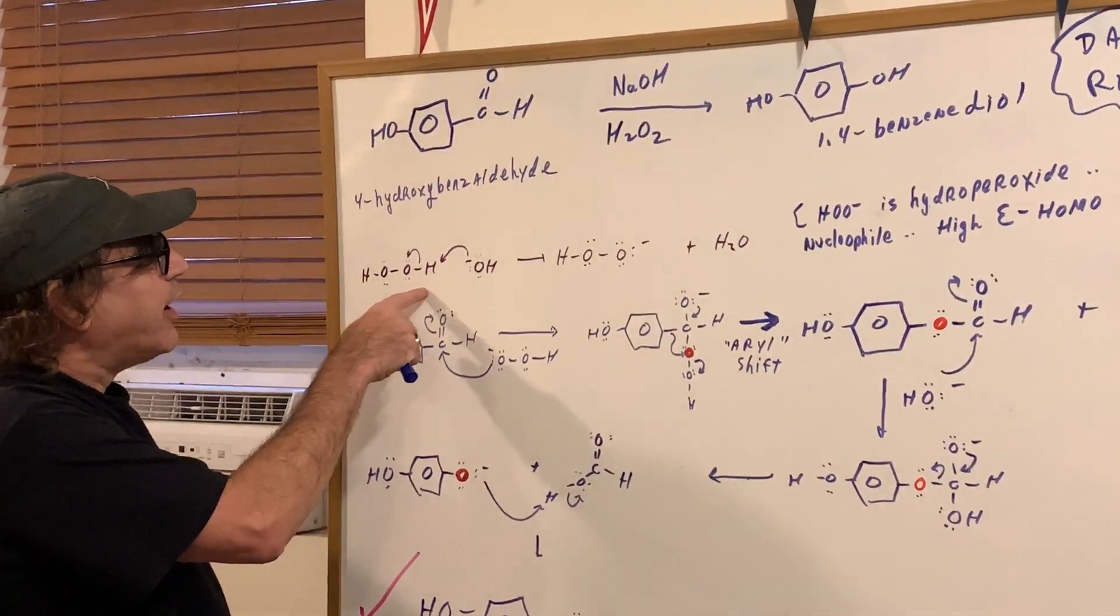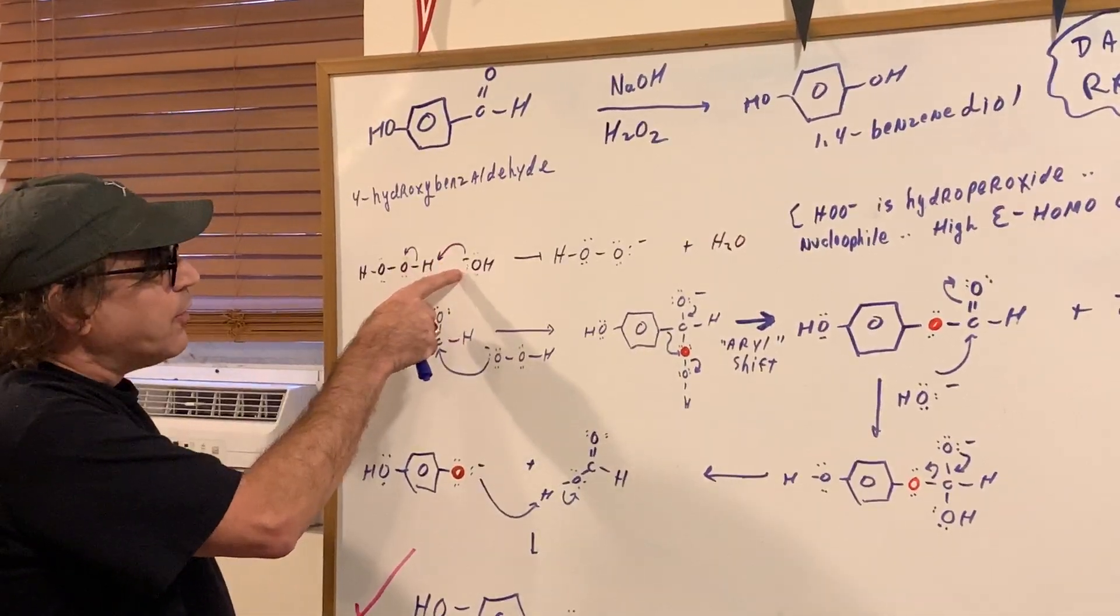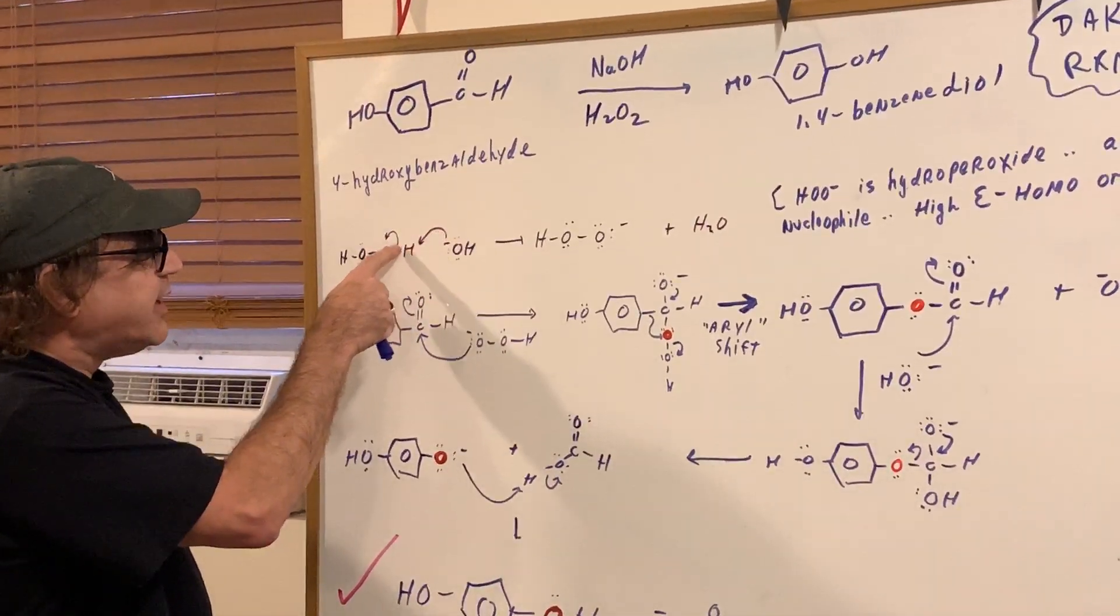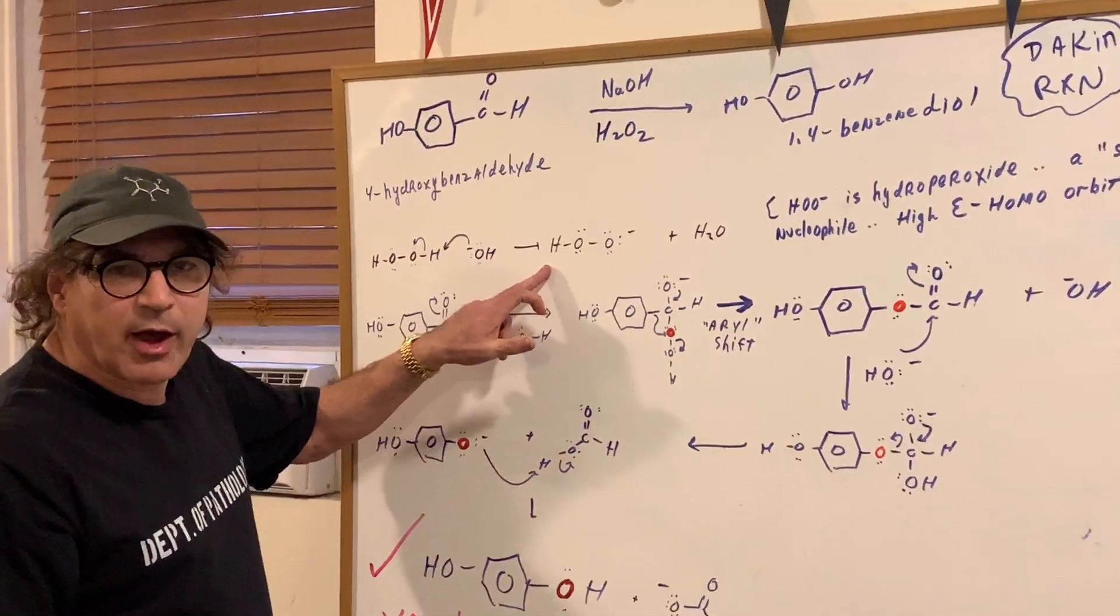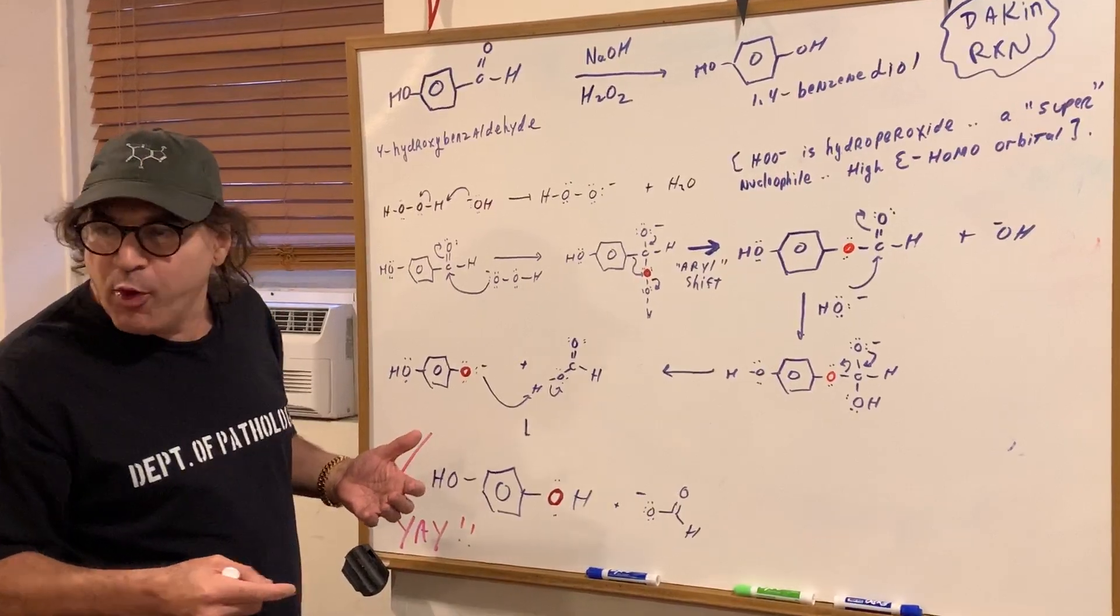if you look at hydrogen peroxide, it's got an acidic proton. The base removes the acidic proton to give what we call the hydroperoxide anion. You've probably never seen this before.